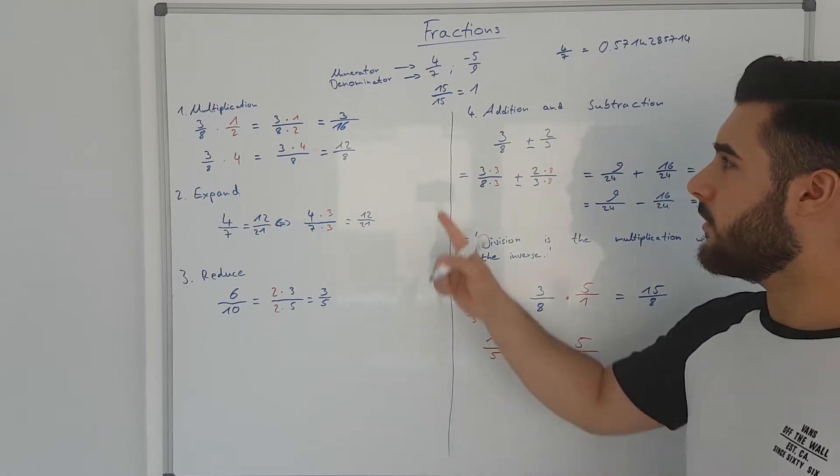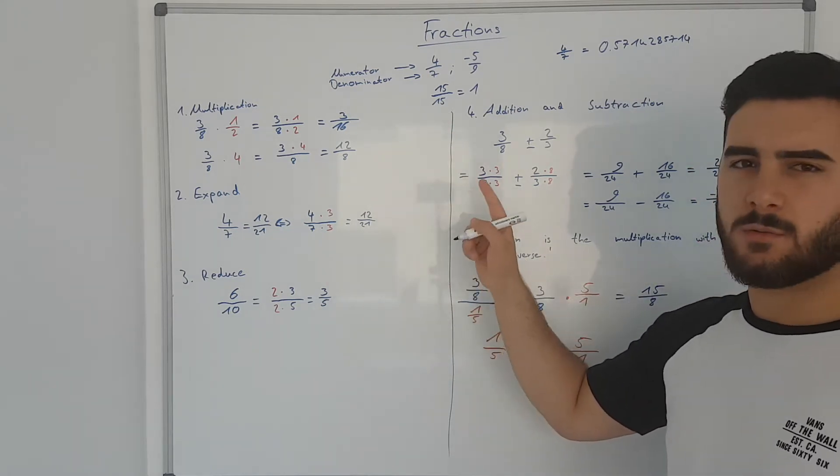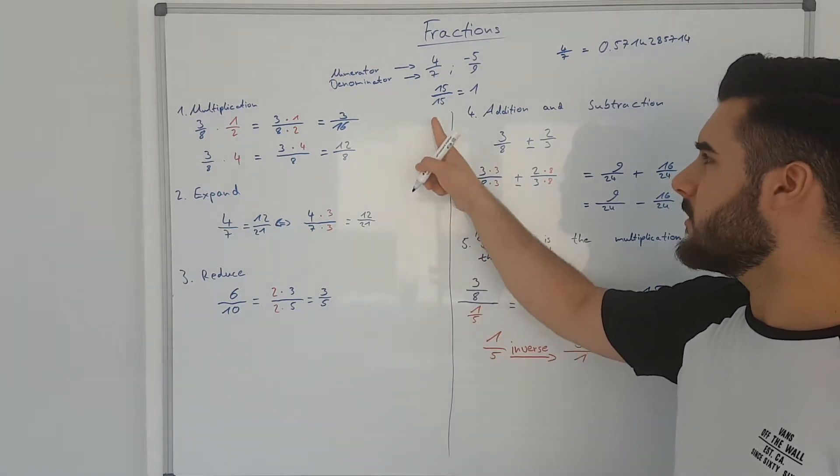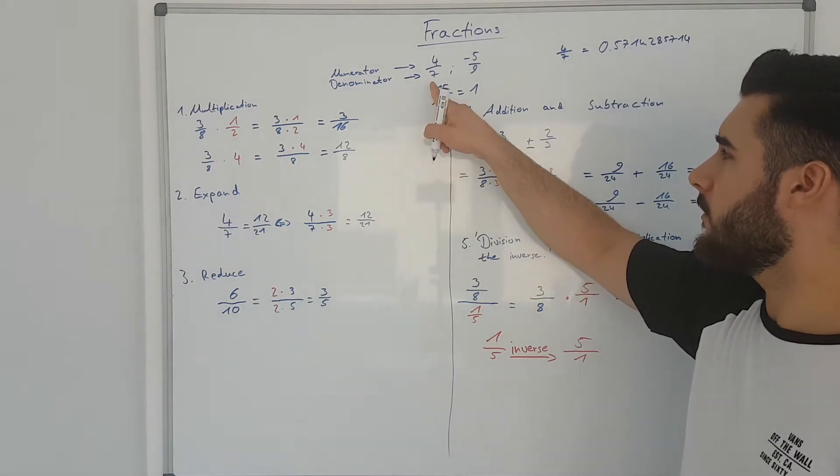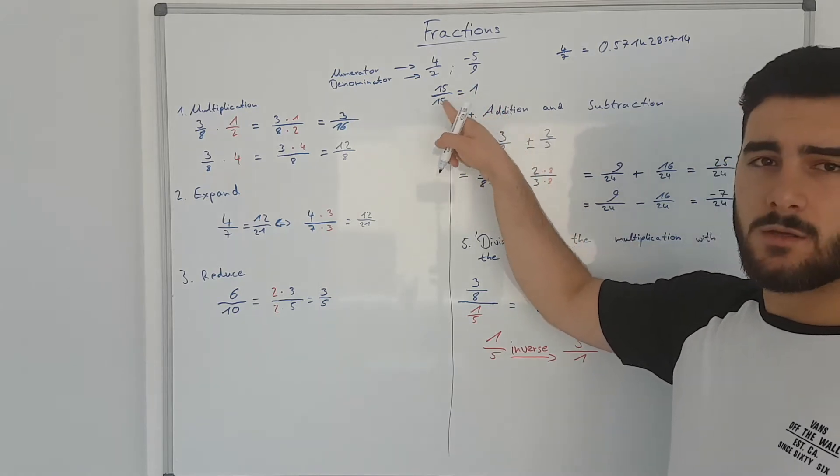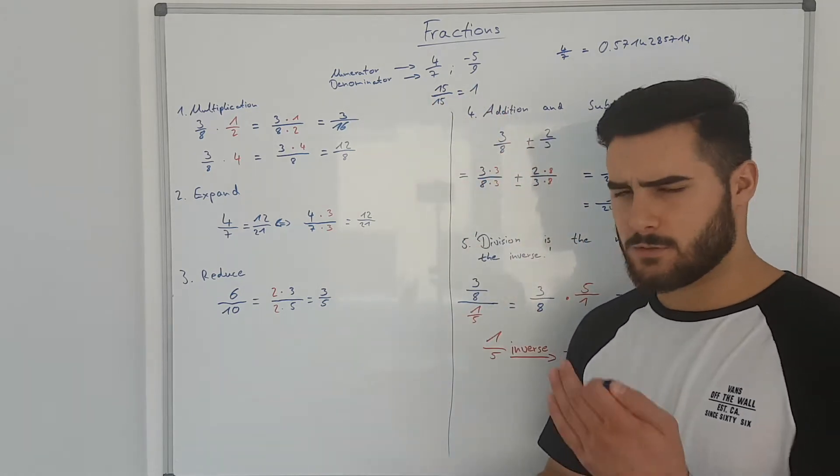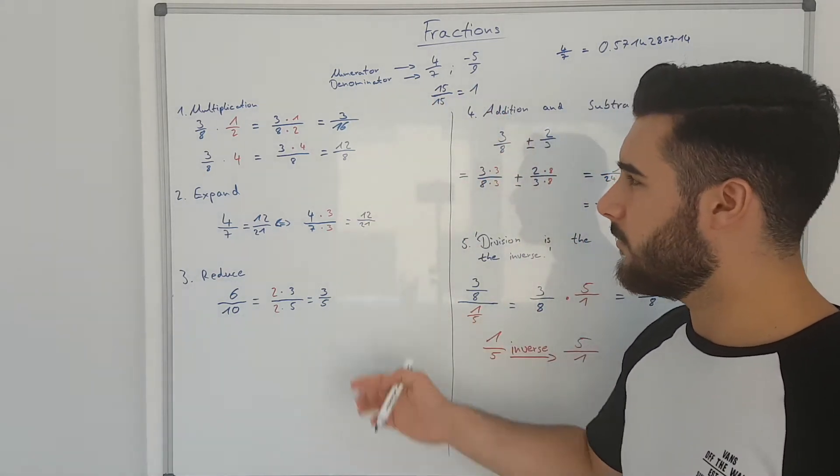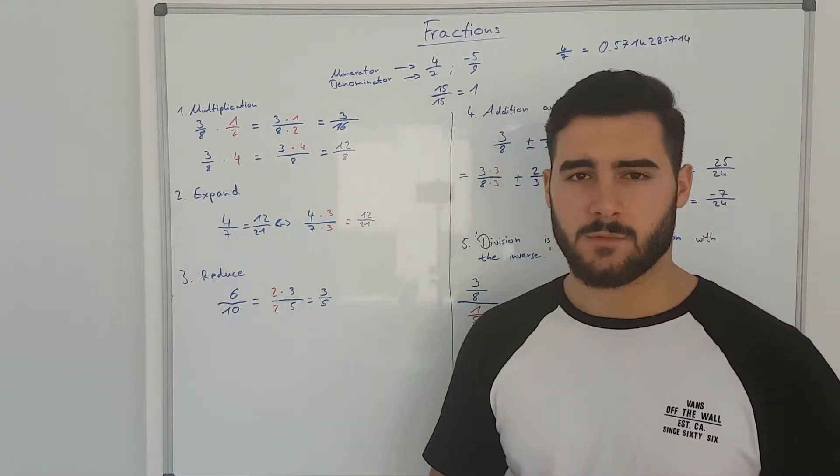Other than that, one thing you need to know and which you will see in the next steps is that if you have the same number in the numerator and the denominator, it's always equal to 1. But you will see that when we go through the different types of calculations.